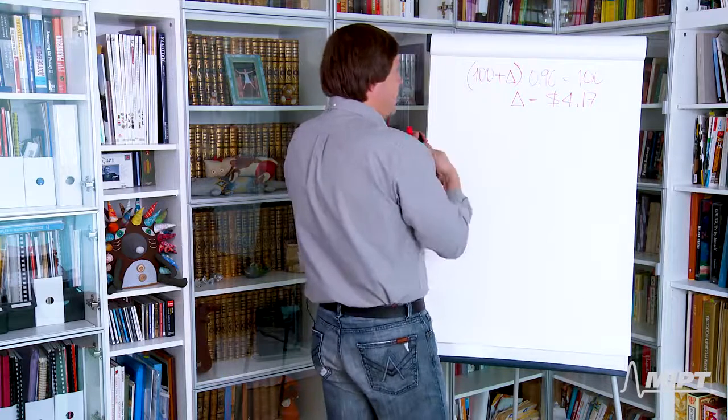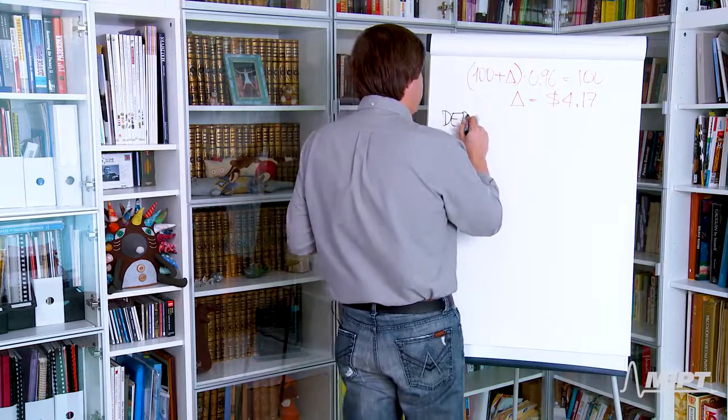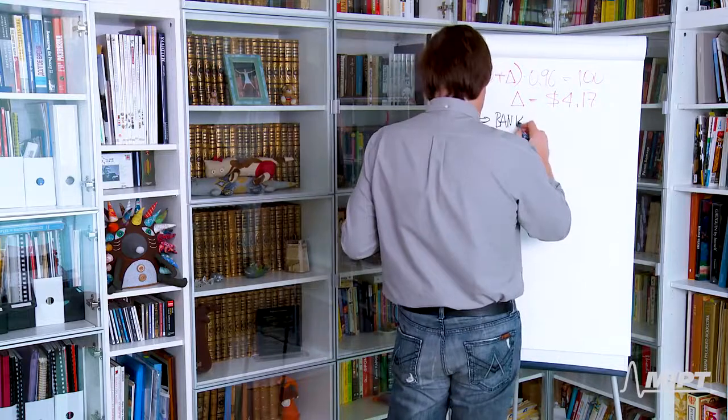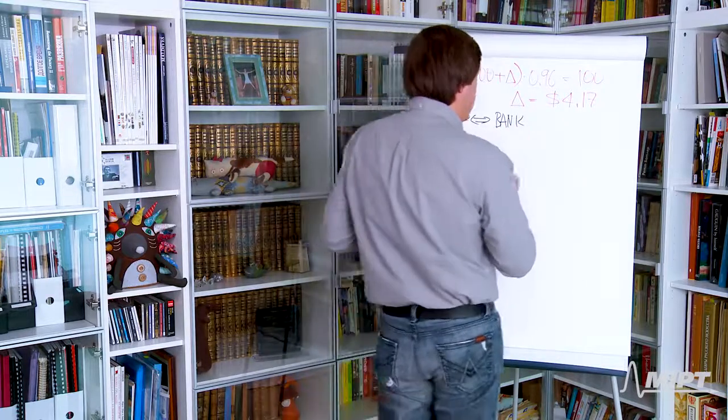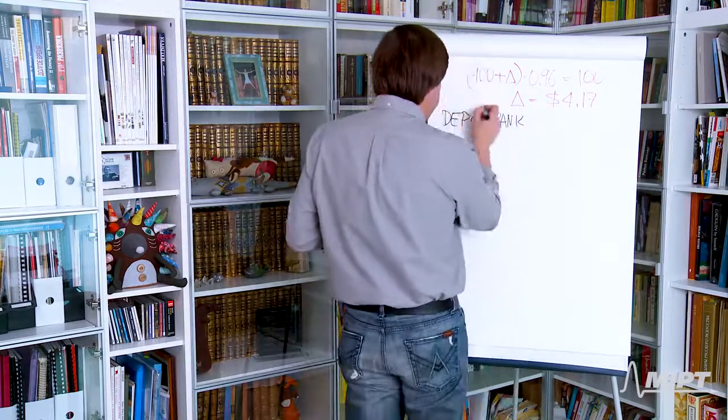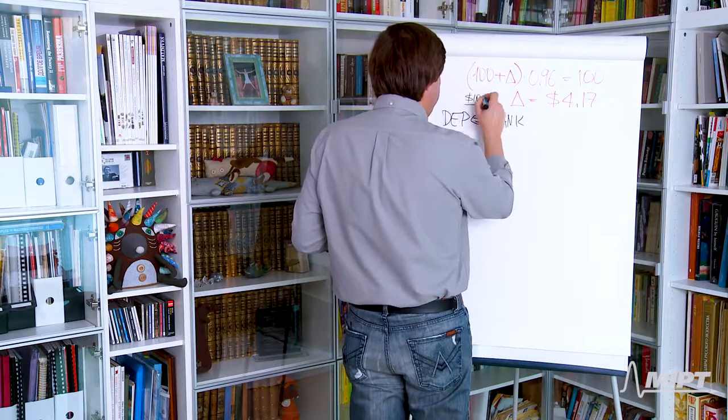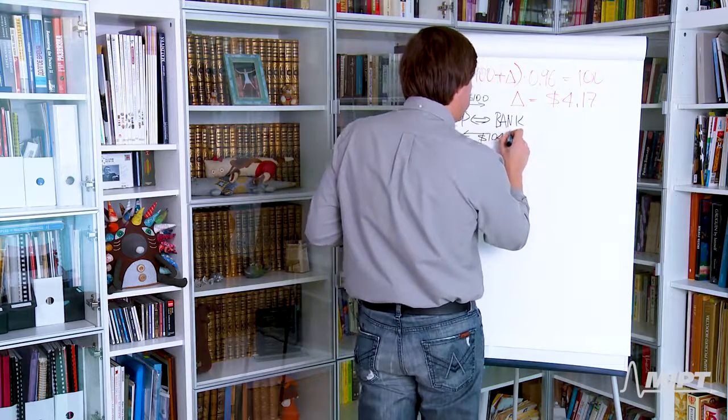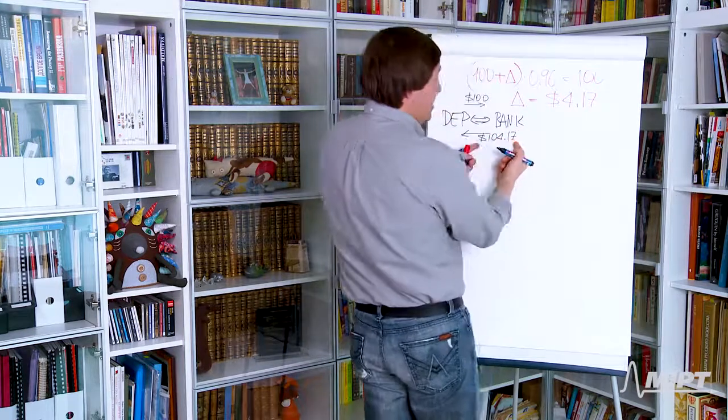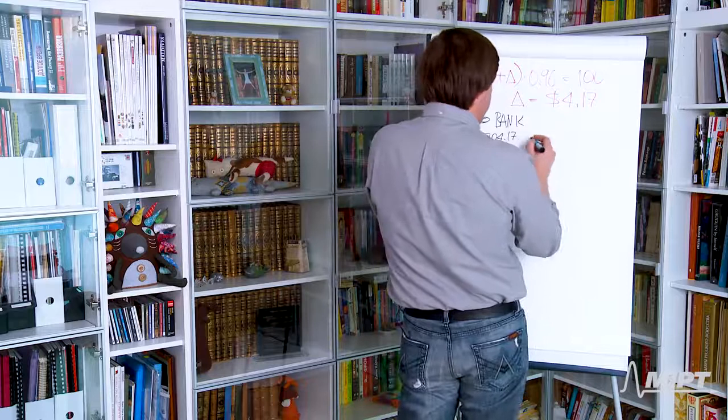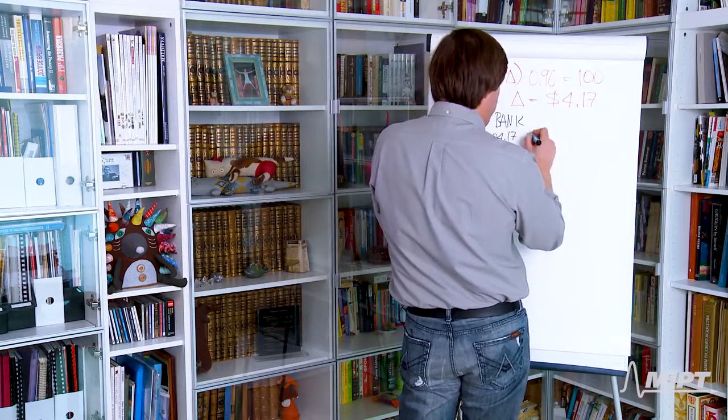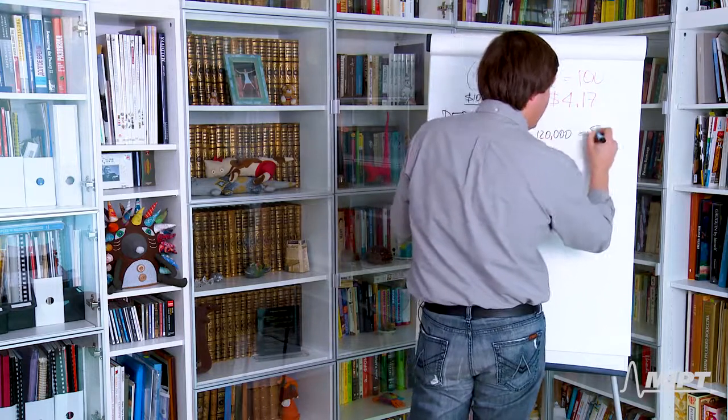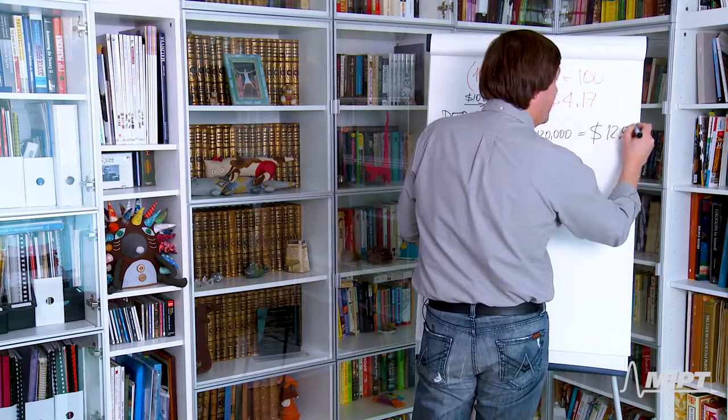Now I will use a black marker because it's better seen. Depositors, bank. How does that look? So depositors give 100 and they receive 104.17. Now this amount, as you can see clearly, the total amount, you have to multiply by 100,000. This is the total number of depositors and that's exactly 12.5 million dollars.